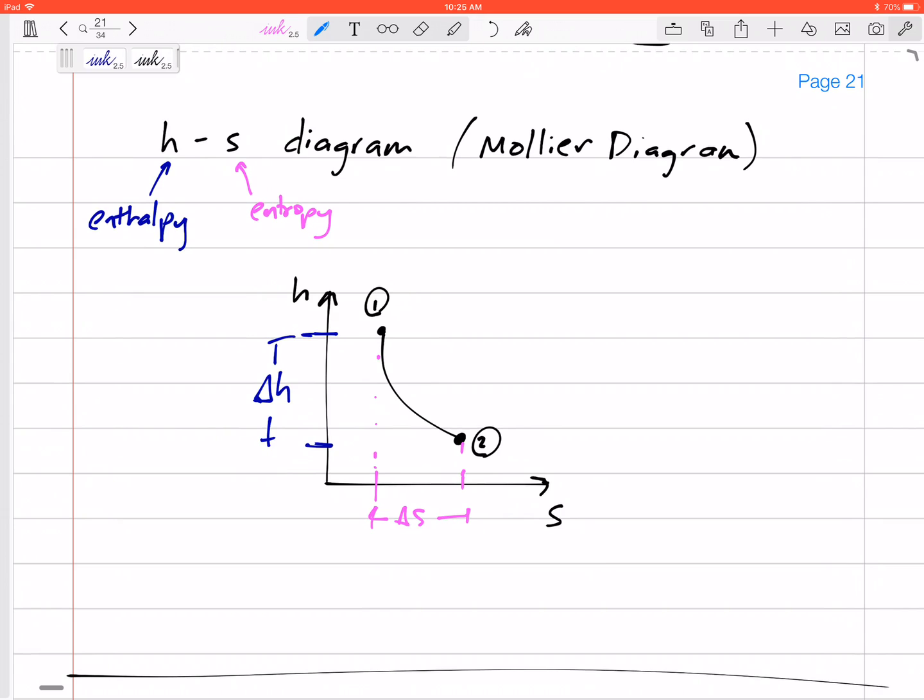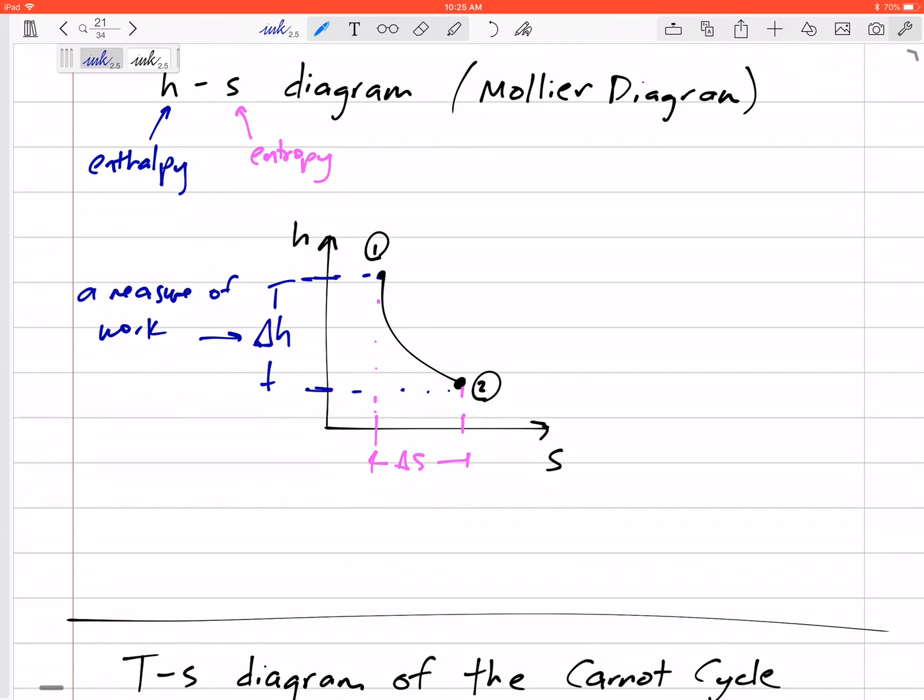Alright, change in H, change in S. So this change in H is sort of a measure of work. Our delta H is a measure of work. And our delta S is a measure of irreversibilities.